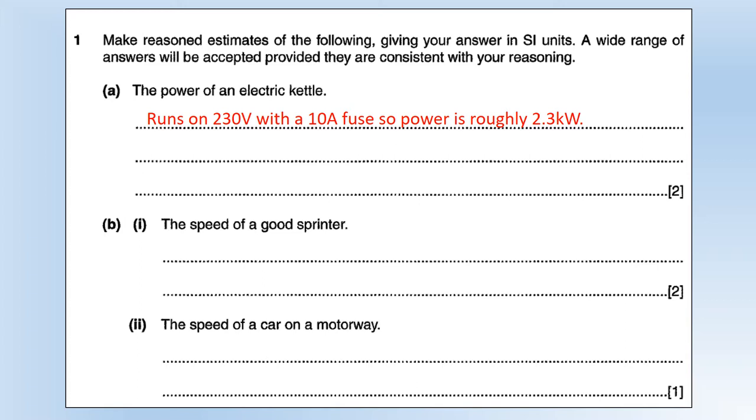Anywhere in this range would be totally acceptable, so if you've got something in the order of kilowatts, certainly in the low kilowatts, you'd have a very reasonable answer. The speed of a good sprinter: the world record I think is 9.43 seconds for a hundred meters, so the way I reason it is a hundred meters in about 10 seconds gives a velocity of 10 meters per second in SI units.